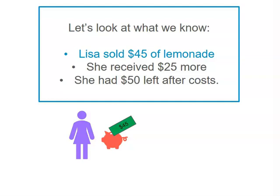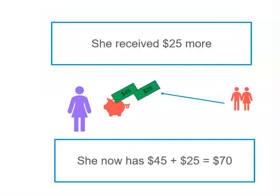At the start, Lisa sold $45. She then received $25 from her parents, so we can add that to our $45. $45 plus $25 equals $70. So at the end of our first step, Lisa has $70.